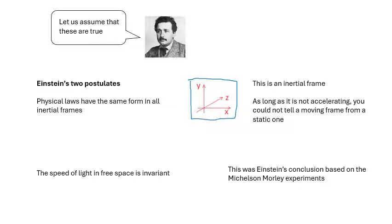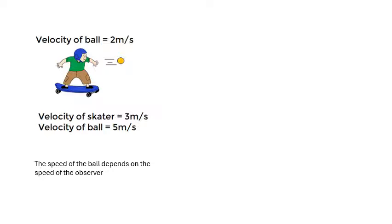The second postulate: the speed of light in free space is invariant. The speed of light is 3×10⁸ m/s — full stop — whether you're moving toward it, away from it, or stationary. This conclusion came from the Michelson-Morley experiment, covered in the previous video.